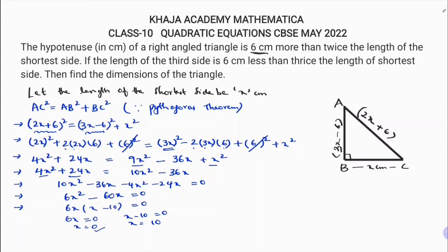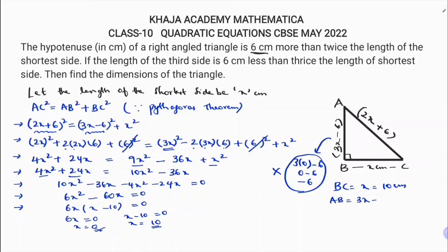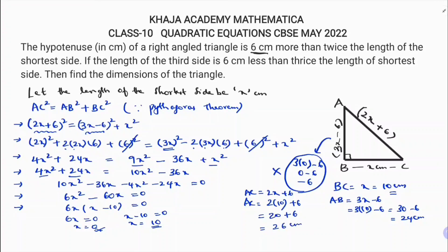If x = 0, then the third side AB = 3(0) − 6 = −6, which is not possible. So x = 10 is the valid answer. Therefore BC = 10 cm, AB = 3(10) − 6 = 24 cm, and the hypotenuse AC = 2(10) + 6 = 26 cm. The three dimensions of the triangle are 10 centimeters, 24 centimeters, and 26 centimeters.